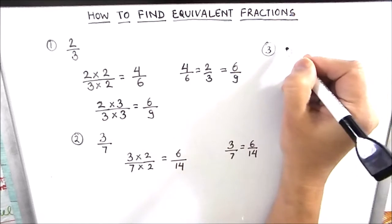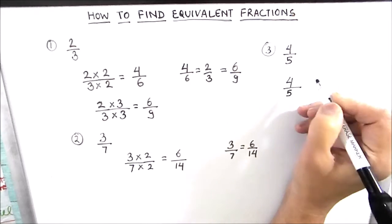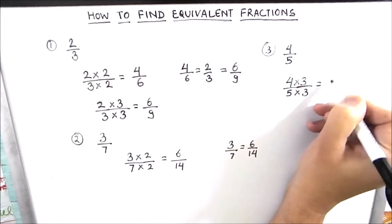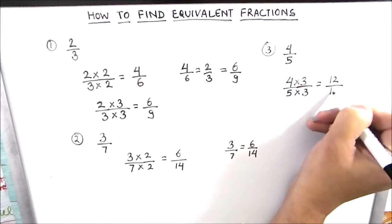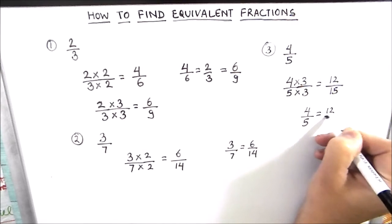One more example is to find the equivalent fraction to 4 by 5. So we will multiply and divide 4 by 5 by 3. So 4 times 3 is 12 and 5 times 3 is 15. 4 by 5 is equivalent to 12 by 15.